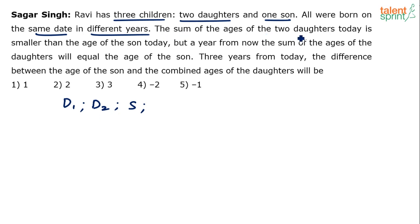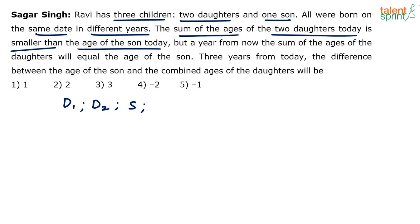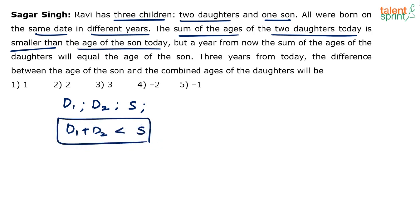The sum of the ages of the two daughters today is smaller than the age of the son today. So the sum of the ages of the two daughters today is D1 plus D2. It is smaller than the age of the son today. So basically, this gives us the inequality: D1 + D2 < S.